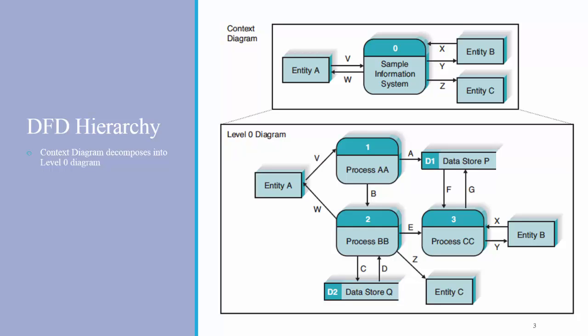A child diagram shows a portion of the parent diagram in greater detail. You can see at the top of this slide there is a context diagram. The context diagram shows a single process with data flows to and from external entities. In the level 0 diagram, the single process of the context diagram is broken out into more detail with more processes and data stores shown.